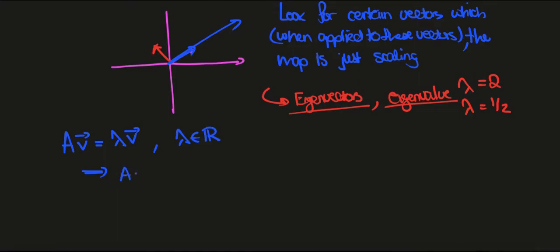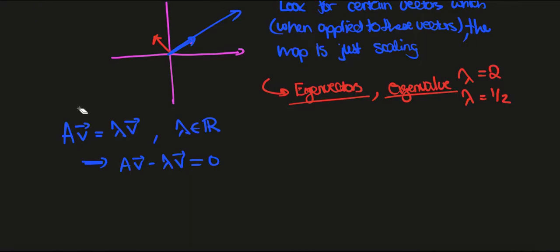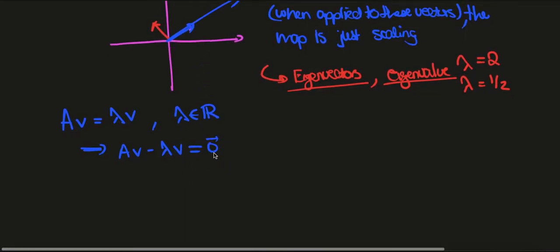Notice that Av equals lambda v if Av minus lambda v equals 0. I'm going to avoid this vector notation now since it's clear that v is a vector. So now what we can do is write this as (A minus lambda I)v equals 0, where this is the zero vector.